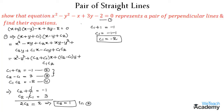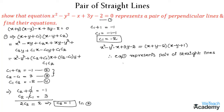So equation 1, which is x² - y² - x + 3y - 2 = 0, equals (x + y + c1)(x - y + c2), that is (x + y - 2)(x - y + 1). Therefore equation 1 represents a pair of straight lines: x + y - 2 = 0 and x - y + 1 = 0. Now we need to prove whether these lines are perpendicular.